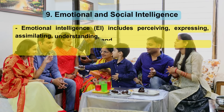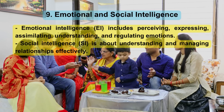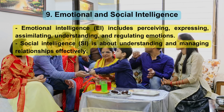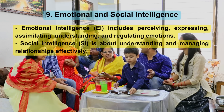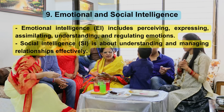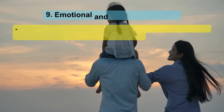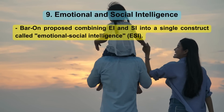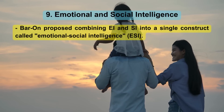Emotional and Social Intelligence: Emotional intelligence includes perceiving, expressing, assimilating, understanding, and regulating emotions. Social intelligence is about understanding and managing relationships effectively. Barhan proposed combining emotional intelligence and social intelligence into a single construct called Emotional Social Intelligence.